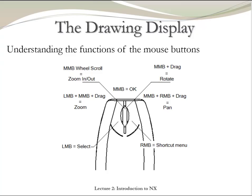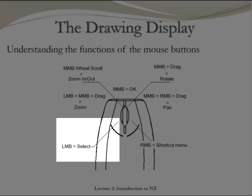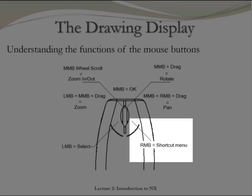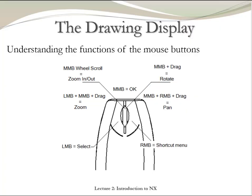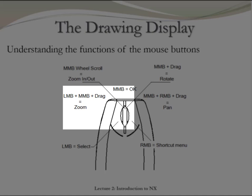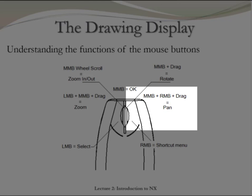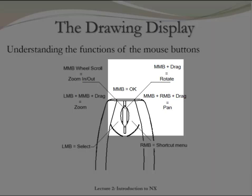An alternative way to modify the display in NX is by using the mouse. To select, simply click the left button. For a shortcut, click the right button. To zoom in or out, use the scroll wheel. To zoom by dragging, click the left button and middle button at the same time and drag. To pan, click the right and middle buttons at the same time and drag. To rotate, simply click the middle button and drag.